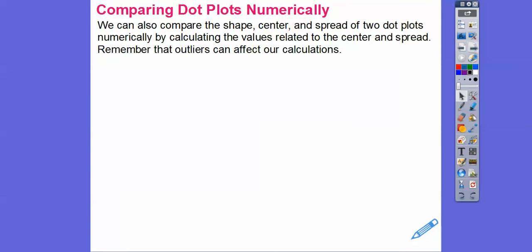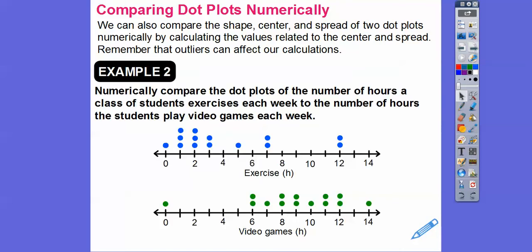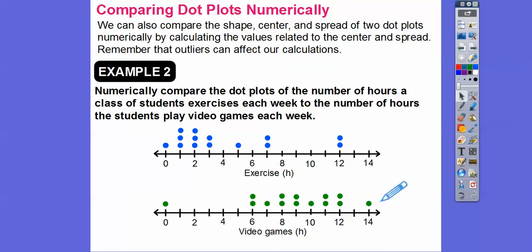We can also compare the shape, center, and spread of two dot plots numerically by calculating values related to the center and spread. Remember that outliers can affect calculations. Let's numerically compare the number of hours students exercise each week to the number of hours those same students play video games each week. Here's one student that doesn't exercise at all, then one who exercises one hour a week, and so on. For video games, here's zero, then one student at six hours, up to one student doing 14 hours per week.